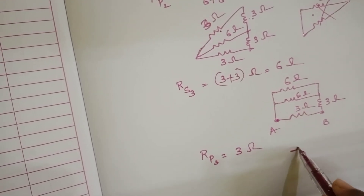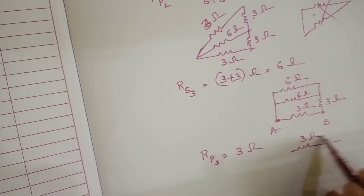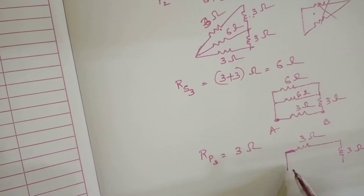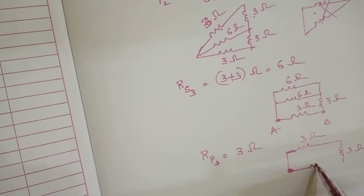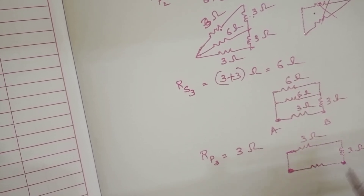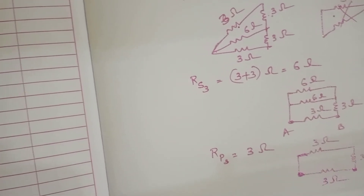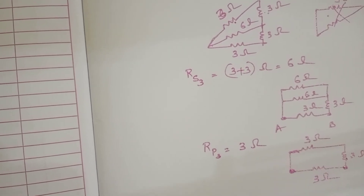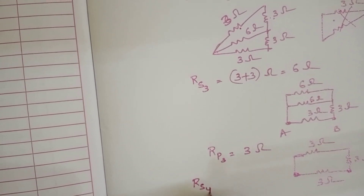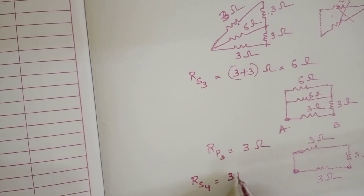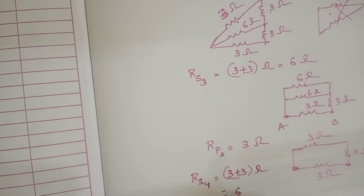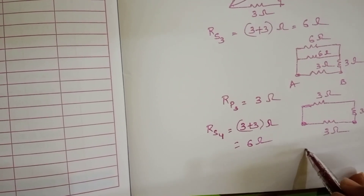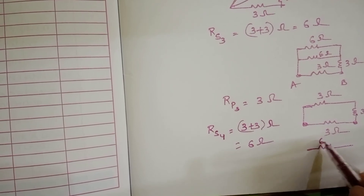So here we get 3 ohm, and here 3 ohm. Now again 3 ohm and 3 ohm — these two resistors are in series. So 3 plus 3 equals 6 ohm.